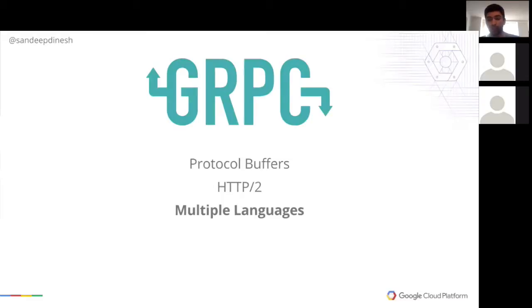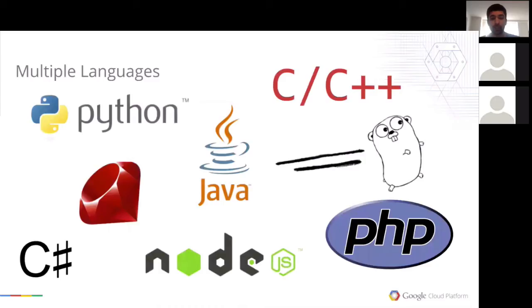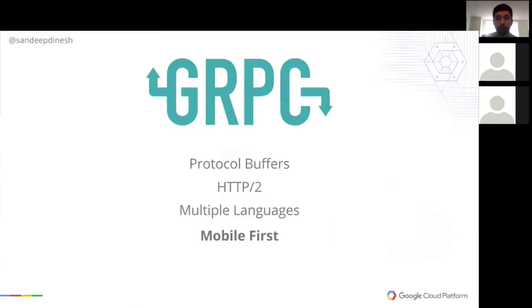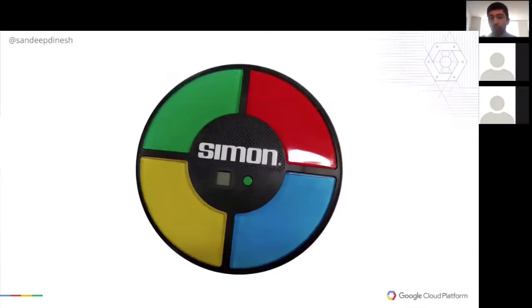Finally, gRPC supports a ton of different languages out of the box — the same languages that protobuf supports: Python, C++, C#, Objective-C, Java, Node.js, Ruby, PHP, Go, and more. I even saw a Swift client in the gRPC repos recently. So it works with both mobile and server technologies. A lot of people use gRPC in Android and iOS apps because a more efficient network is great for mobile apps. If you're doing a REST API today and want a real-time streaming API, gRPC might be a great fit. It works great on mobile, on the server, and also for IoT.